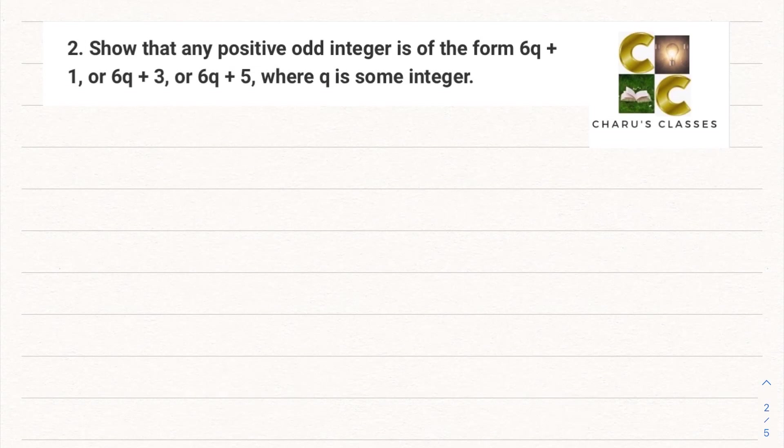Hello students, welcome to Charu's classes. Today we are going to do exercise 1.1 question number 2. Show that any positive odd integer is of the form 6q + 1 or 6q + 3 or 6q + 5, where q is some integer.